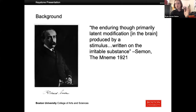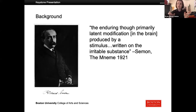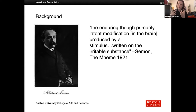In 1921, the guy on the left — his name is Richard Semen — wrote that the enduring, though primarily latent, modification produced by a stimulus written on the irritable substance was the engram. Basically, there's some subset of cells for every experience that you personally remember, and those cells hold on to that phenomenological experience — that quality of falling off your bike when you were six years old, for example. There's some subset of cells for every single one of those experiences.